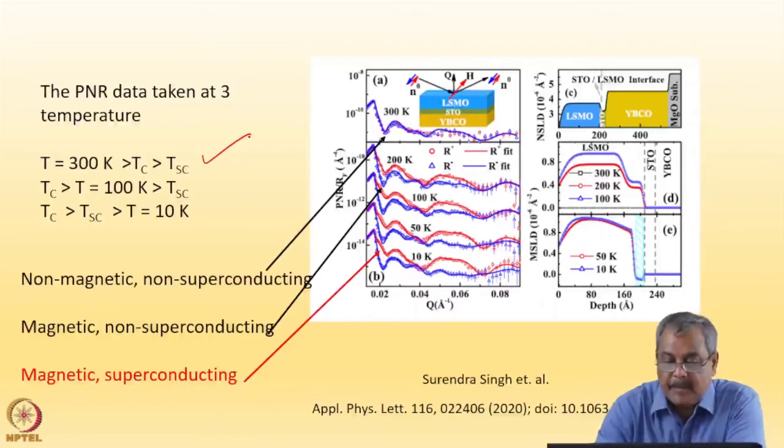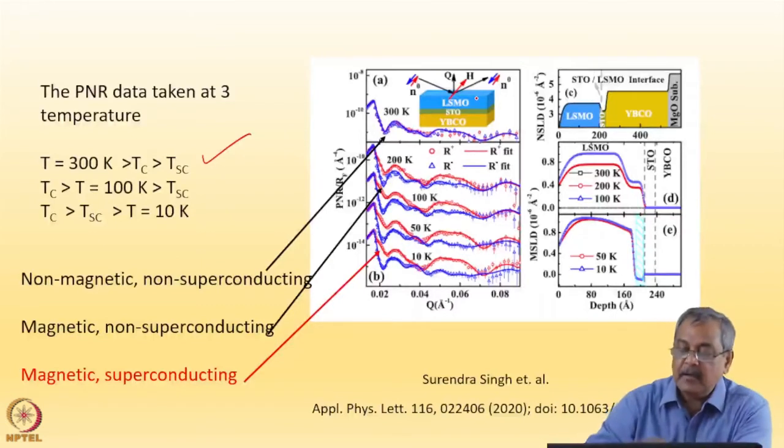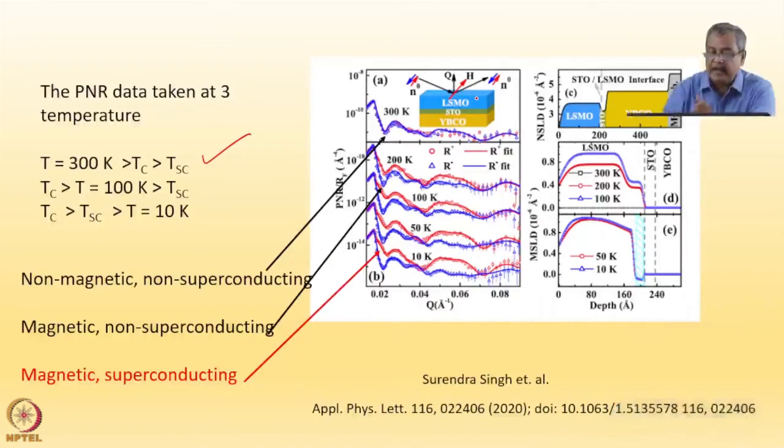Then data was taken at 100 Kelvin. At 100 Kelvin, LSMO has a Curie temperature of 290 Kelvin, so this is ferromagnetic, but the superconductor is still normal. And then at 10 Kelvin, when the magnetic material is ferromagnetic and the superconductor has become superconducting at 65 Kelvin.